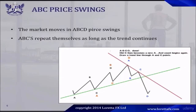ABC price swings. The market moves in ABCD price swings. ABCs repeat themselves as long as the trend continues. Here we can see the ABCDs — we have A, B, C, D. This is how the market works. The thing you must understand is that this entire leg here is wave A.